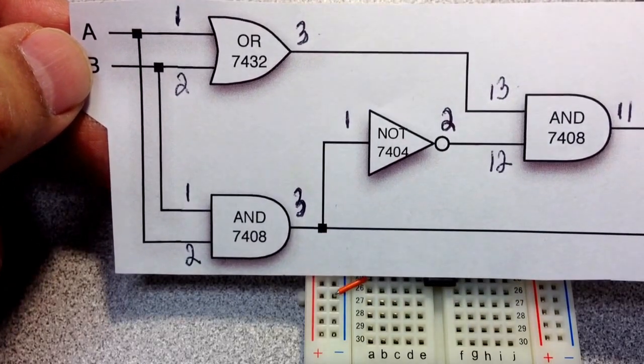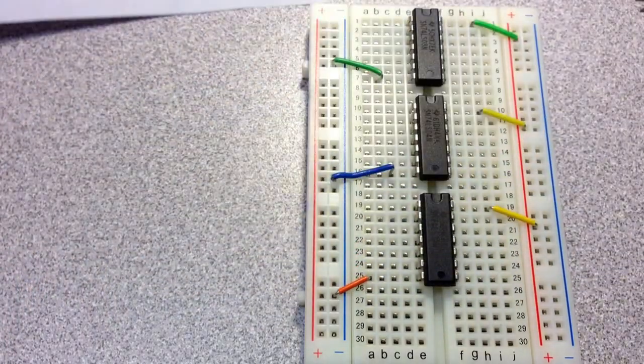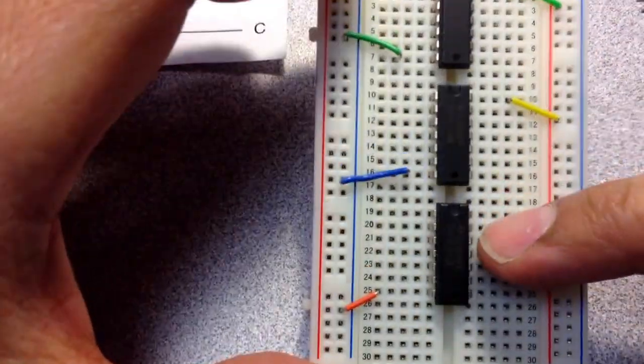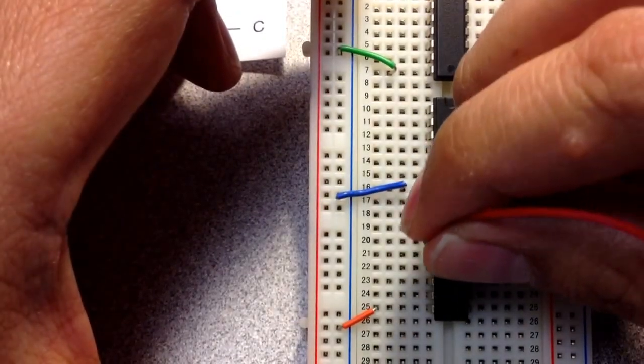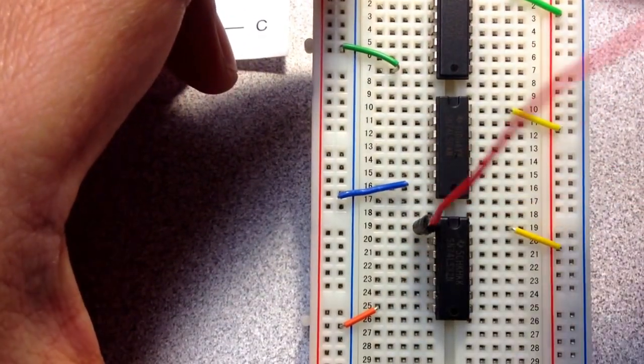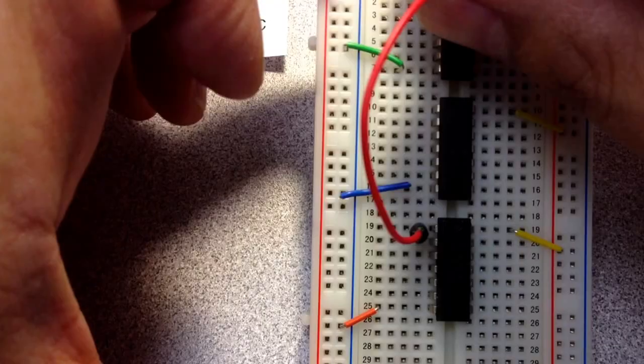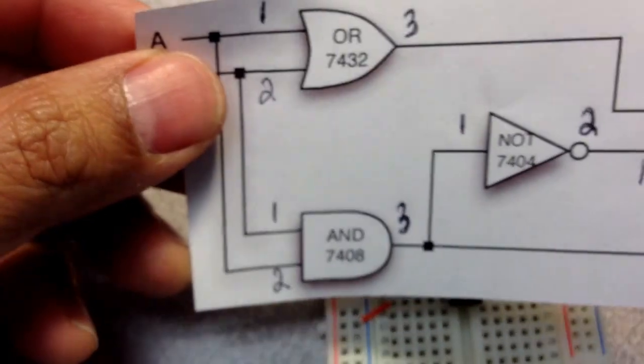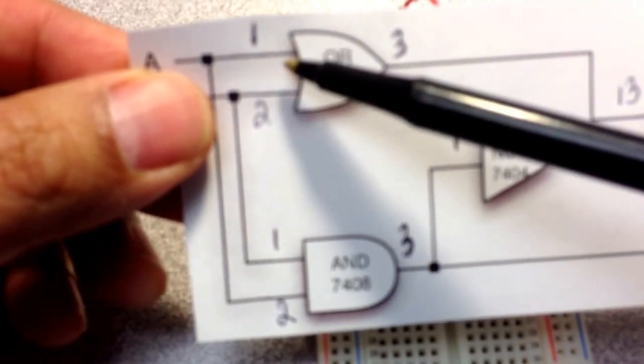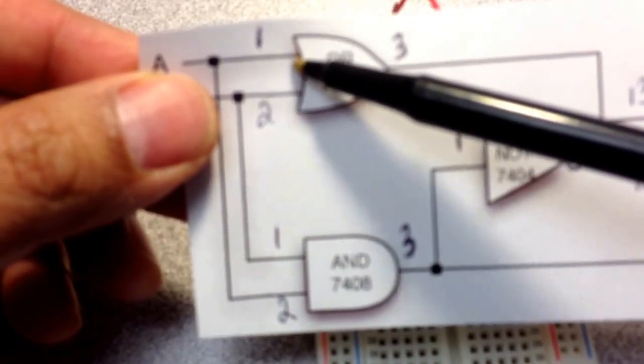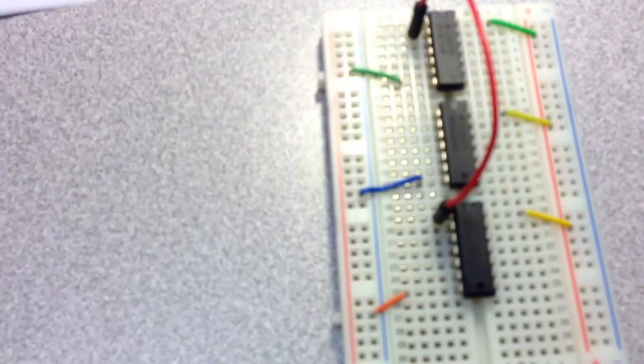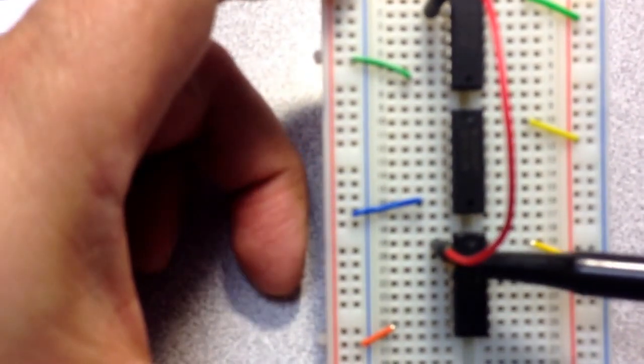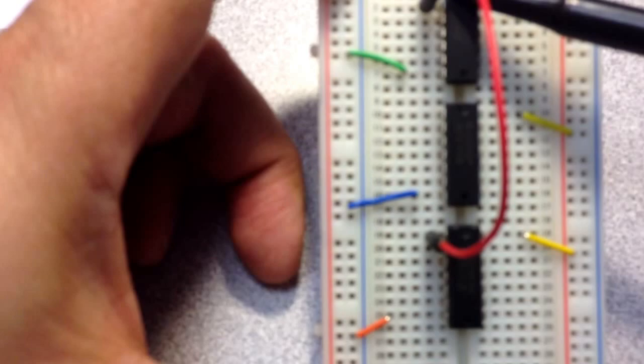So we'll start with that. Connect the OR gate down here, and so we're going to take pin 1 of the OR gate, make a connection to pin 2 of the AND gate. There we go. Because that's what we said we would do, we would connect pin 1 of the OR gate to pin 2 of the AND gate. So that's what we just did there.